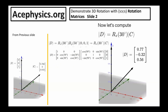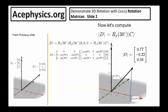Continuing with that example, let's compute vector d, which is vector c rotated by 30 degrees about the x-axis. So we take vector b, rotate it by 50 degrees about the y-axis, and then rotate that result by 30 degrees about the x-axis. This gives us a new vector d, and as you can see, vector d is rotated out of the zx plane.